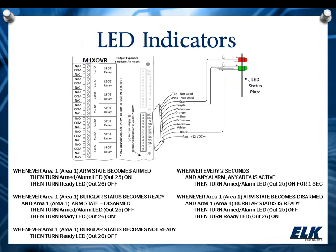Now let's talk about LED indicators. I have an LED status panel with a red LED and a green LED — maybe something you want near an access keypad or as a visual indicator in another location. The desired outcome is that when the system is ready to arm, the green LED comes on; if it's armed, the red LED is on; and if there's an alarm, the red LED blinks. I'm using an M1XOVR output expander here, and instead of using the relays on the output expander, we're going to use the voltage outputs, since 50 milliamps is enough to drive our LEDs.